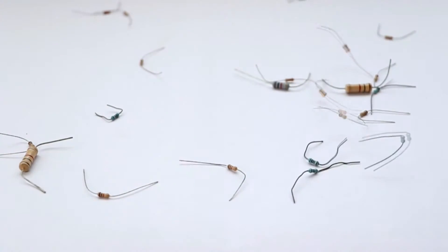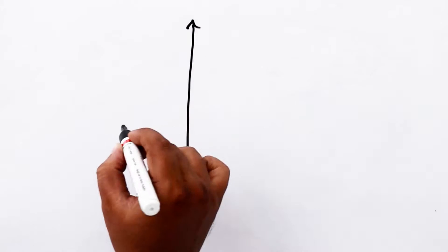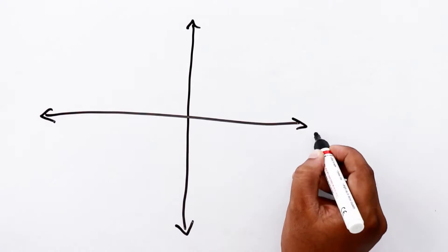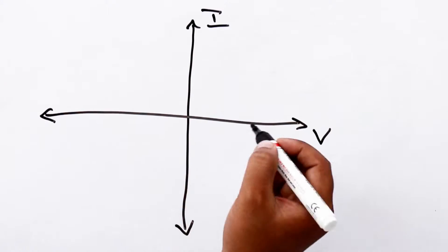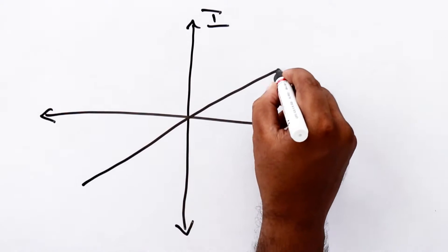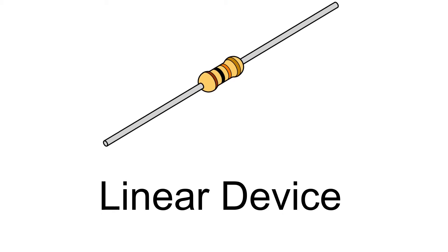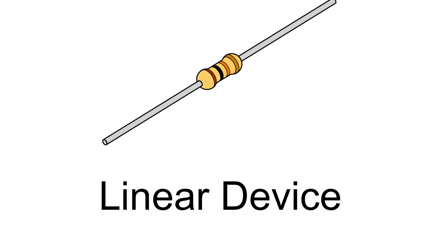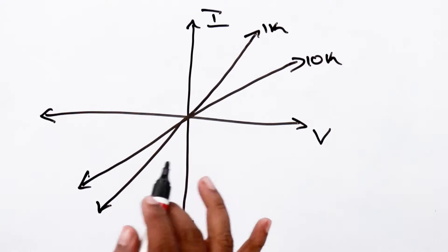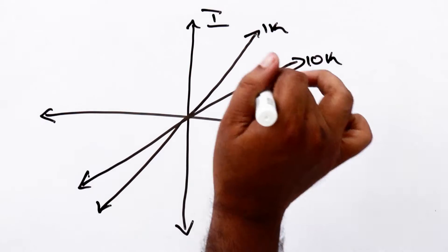So we had a glance of what resistor can do. Let's understand its working better using a VI characteristics graph. This is a typical VI characteristics curve for resistors of different values. This one is for 10K resistor and this one is for 1K resistor. Always remember, resistor is a linear device since the resistor VI response is always proportional in nature.